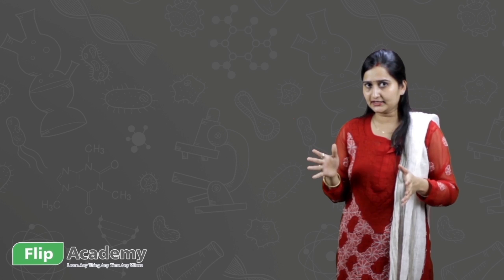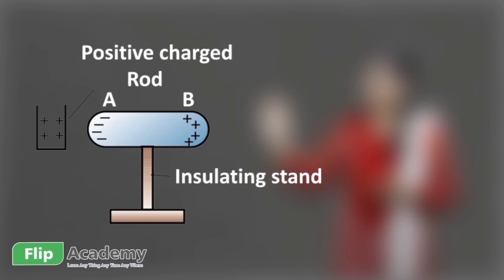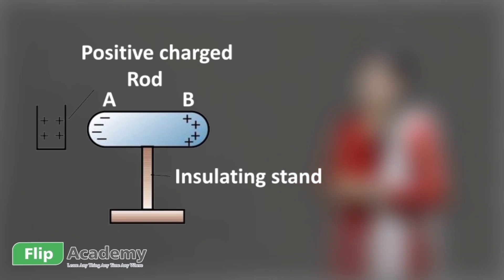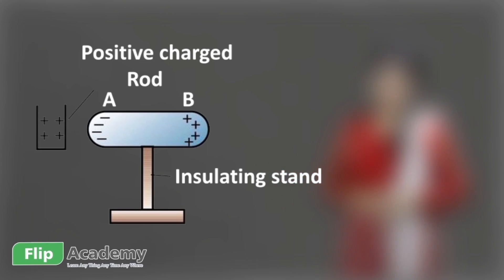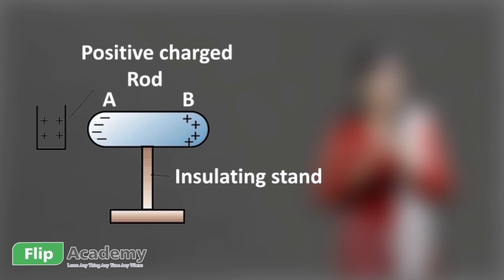This insulated conductor, which is mounted on an insulated stand, is brought near the positively charged glass rod. You can see from the diagram that the conductor has two sides — side A and side B. Side A is near the glass rod and side B is away from it. As soon as the glass rod is brought near side A, the electrons in the conductor move towards side A, because the electrons are attracted by the positive charge of the glass rod.